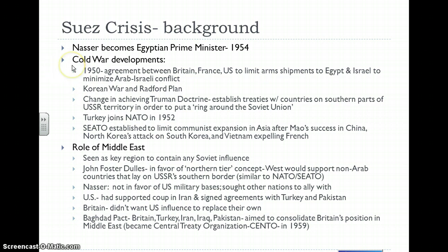In 1950, there was an agreement between Britain, France, and the U.S. to limit arms shipments to Egypt and Israel in order to minimize the Arab-Israeli conflict, and this was only two years after the Arab-Israeli War in 1948. At that point, Nasser had not become the prime minister yet of Egypt, but this would be something that would influence a request that he made to the U.S. later on.